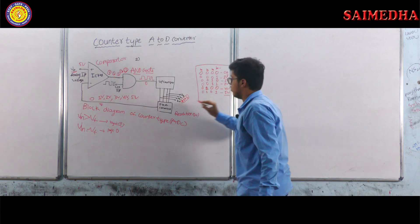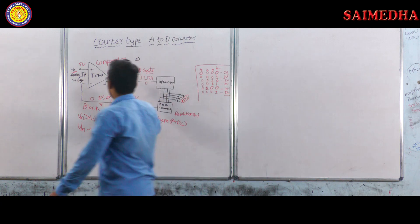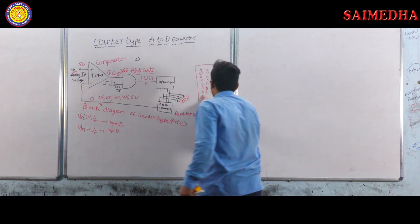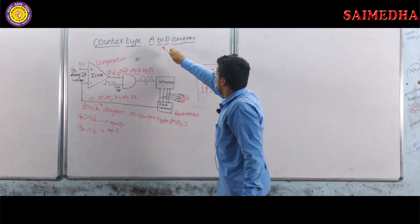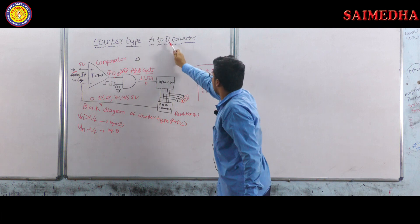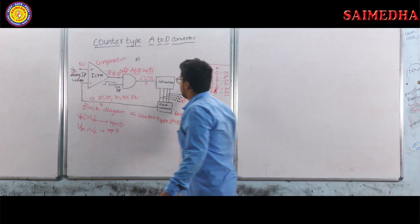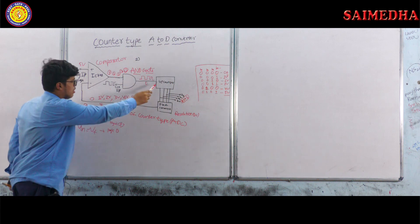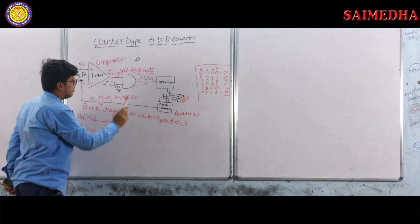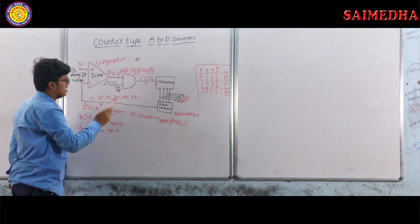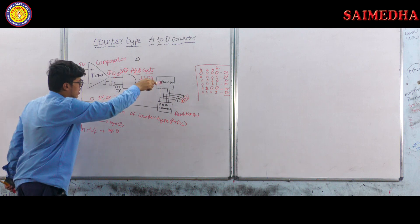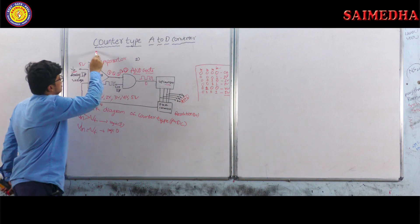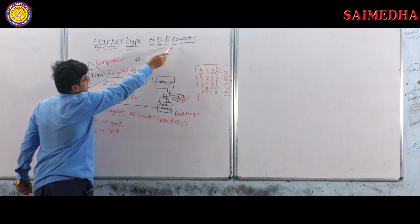We applied five volts in analog form and we got the equivalent value in digital format, which is why it is called an analog to digital converter. In this block diagram, the most important block is the up counter — without the up counter this operation cannot exist. Because the up counter is the main part of this operation, the circuit is named the counter type A to D converter.